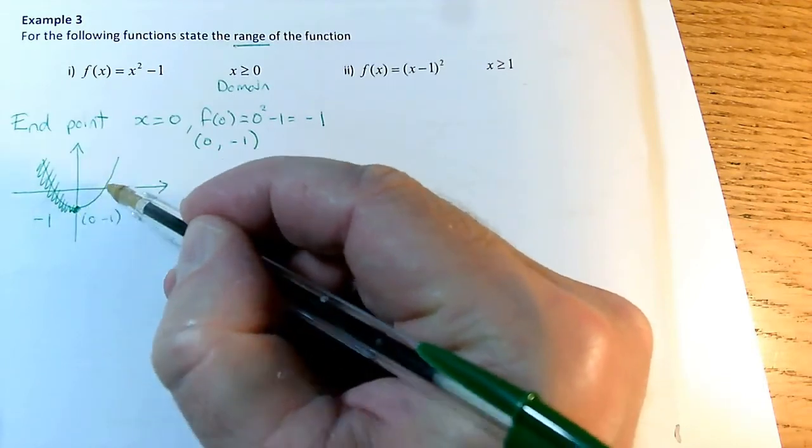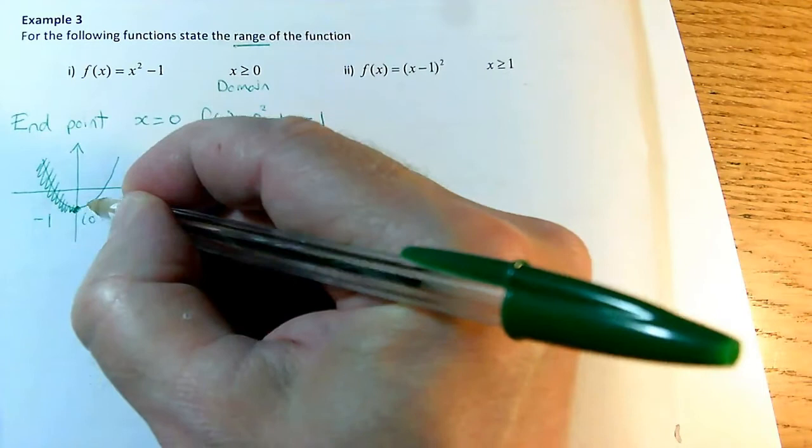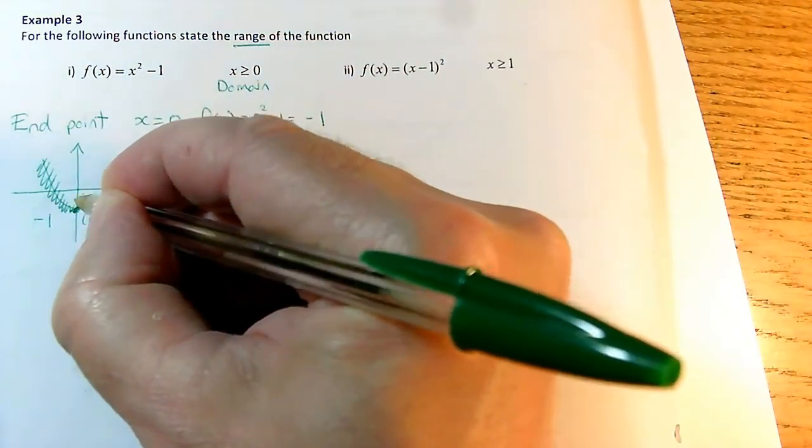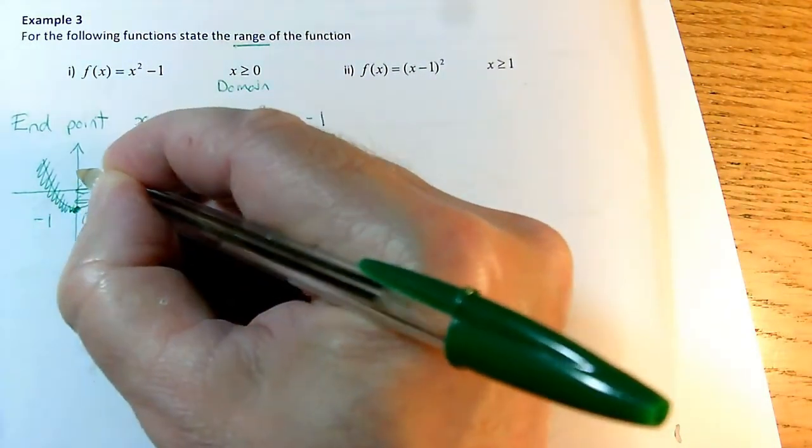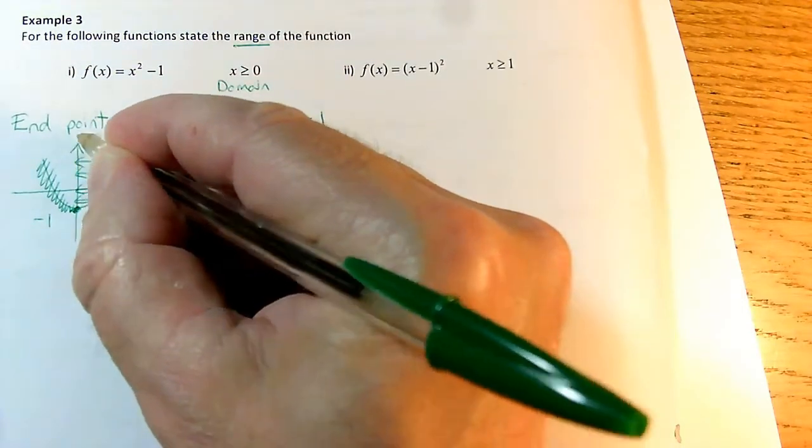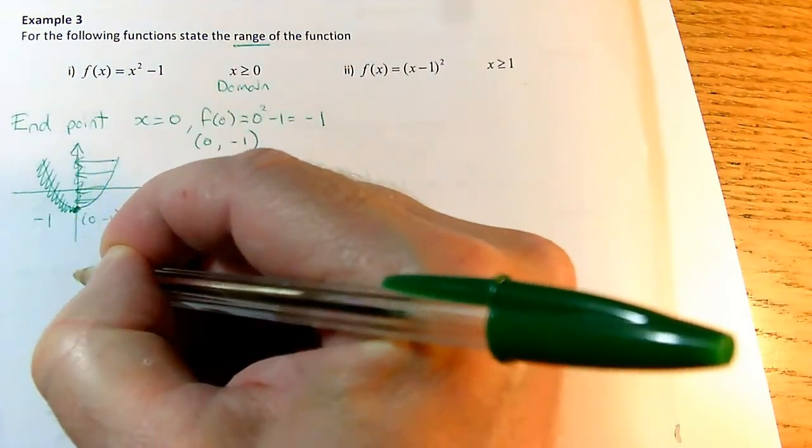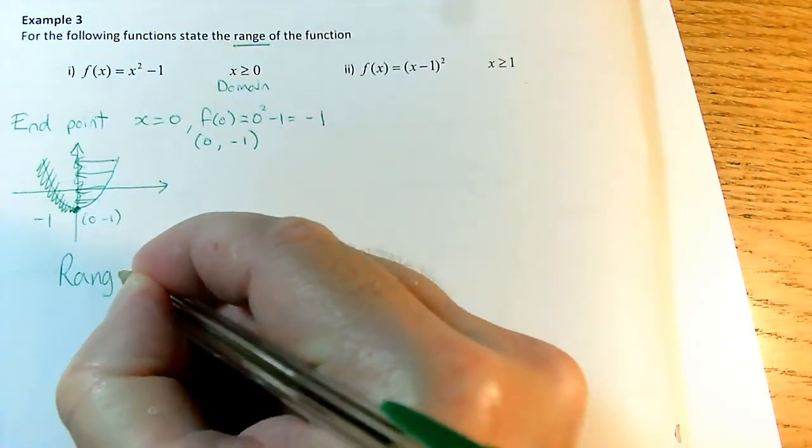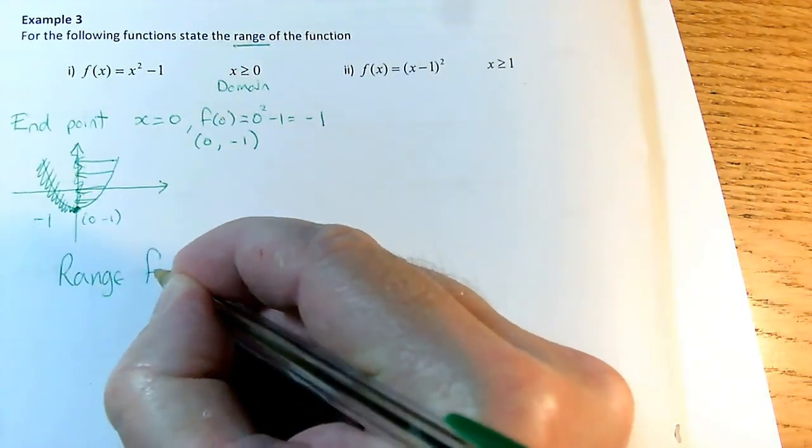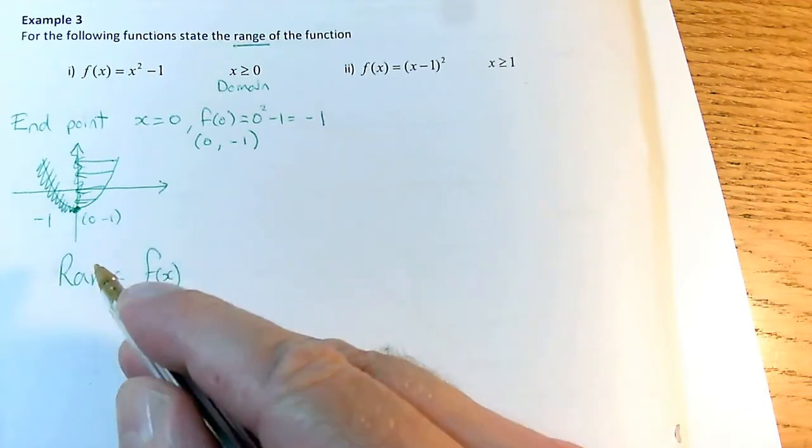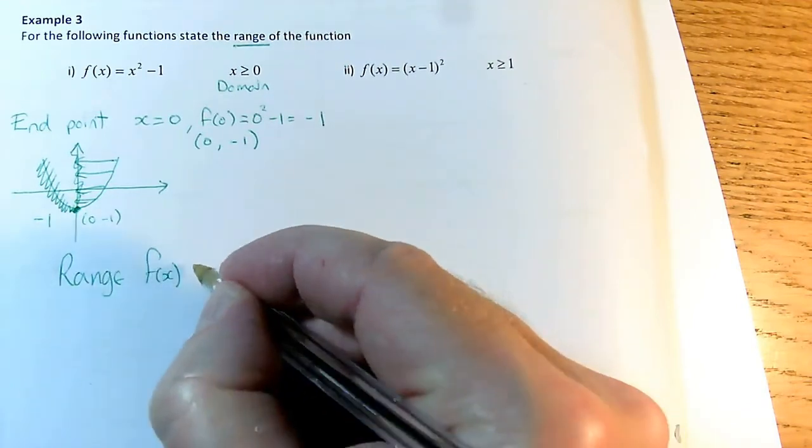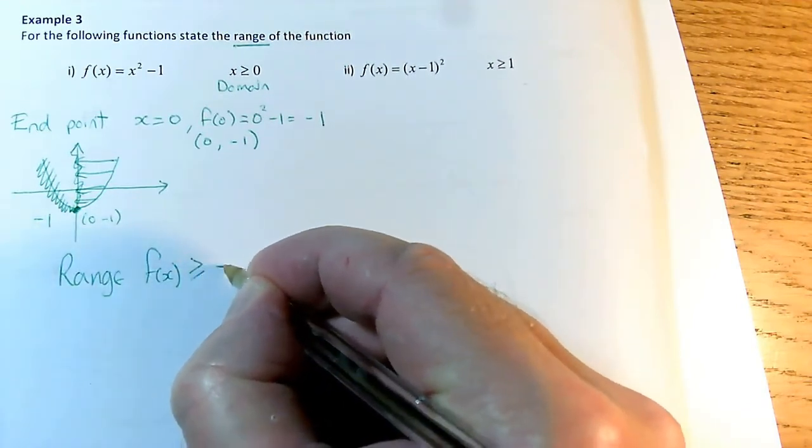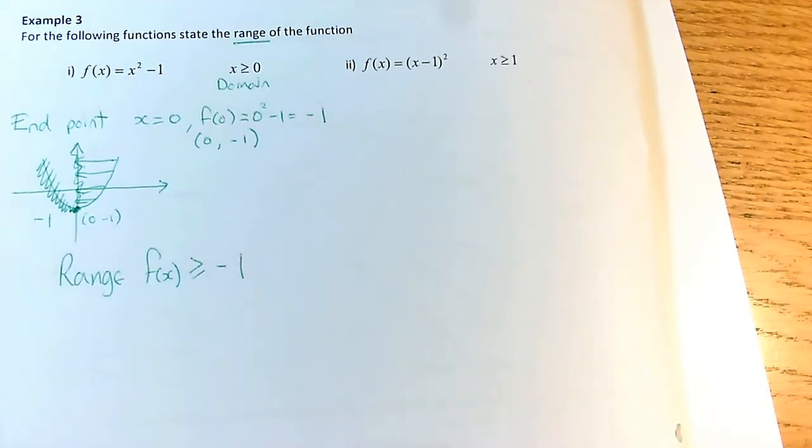And again, I ask the question, what kind of y-values can I get out? We can see that we can get this value and all of these y-values. There are points on the graph corresponding to all the y-values above that, but none of the ones below. So when we're describing the range, we need to be talking about what f(x) is allowed to equal. We can see from our sketch that f(x) is greater than or equal to -1.